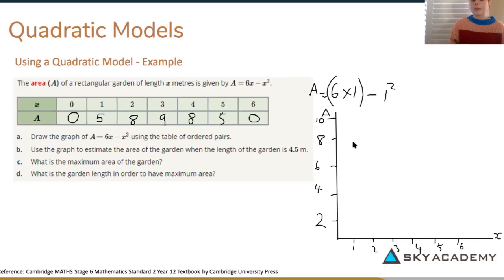Now I've got my scale I can put these points onto my number plane. So 0 is 0, 1 is 5, 2 is 8, 3 is 9, 4 is 8, 5 would be 5 and 6 would be 0. And so now I can connect these dots and it should create a parabola. So that's question A done.